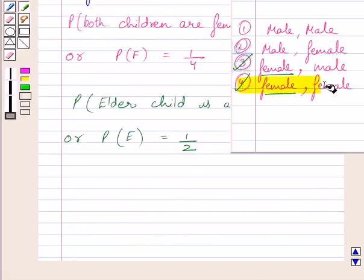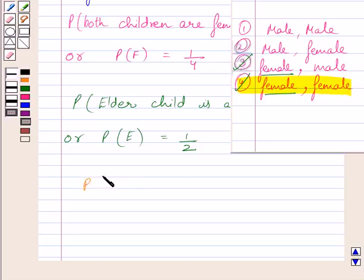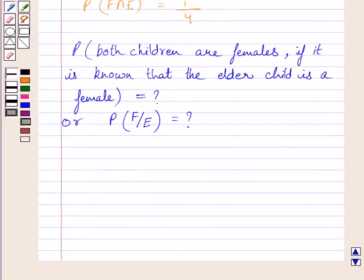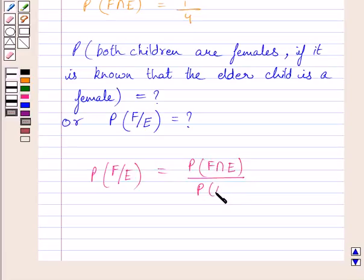Clearly we can see this outcome is favorable to both event F and event T. So, probability of F intersection E is equal to 1 upon 4. The outcome favorable to event F and event E is equal to 1 and total possible outcomes is equal to 4, so probability of F intersection E is equal to 1 upon 4. Now we have to find the probability that both children are females if it is known that the elder child is a female — that is, the probability of event F when event E has already occurred. We know probability of event F when event E has occurred is equal to probability of F intersection E upon probability of event T.